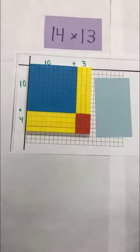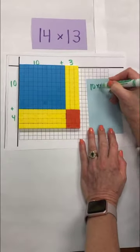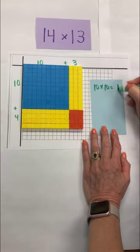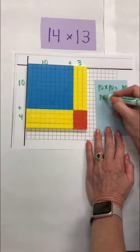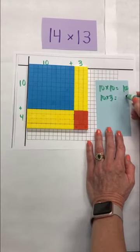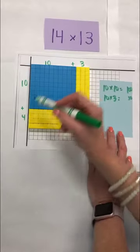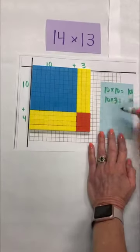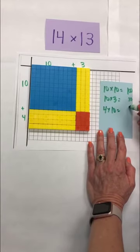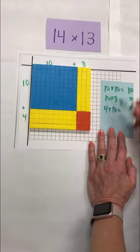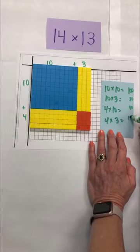So ultimately we want students to see that 10 times 10 equals 100. 10 times 3 equals 30 and we want to make sure we're trying to line this up here. I'm not doing a good job of that though. 4 times 10 is going to give us 40 and 4 times 3 equals 12.